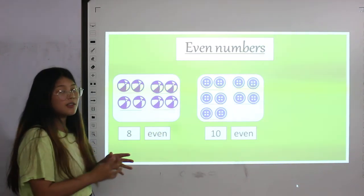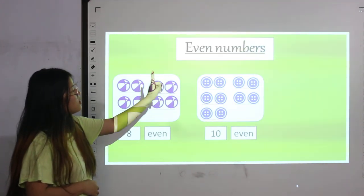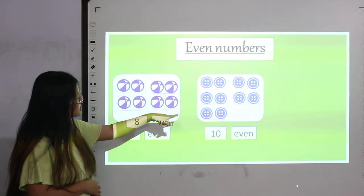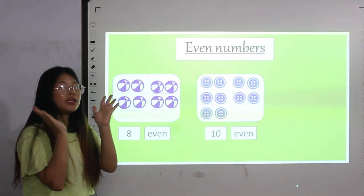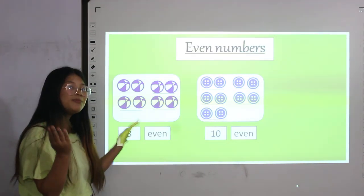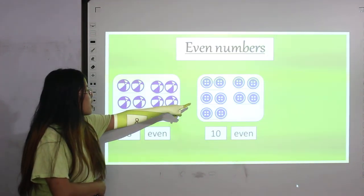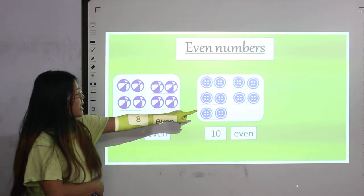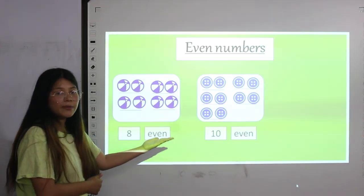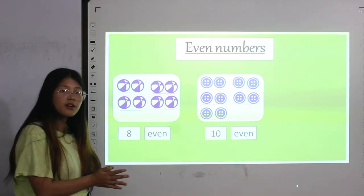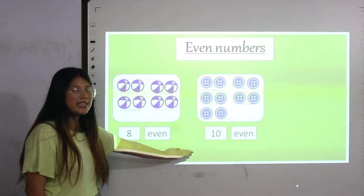We have some buttons here. Let's count — one, two, three, four, five, six, seven, eight, nine and ten. We have ten buttons. To see if ten is odd or even, we pair them up. These two are in pair, those two are in pair, these two are in pair, those two are in pair, and these two are in pair as well. None of them are left alone — all are in pair, so ten is an even number.